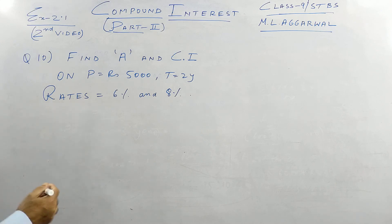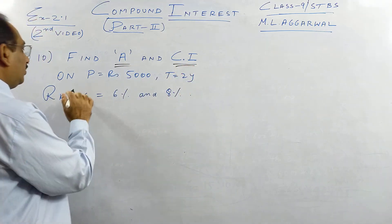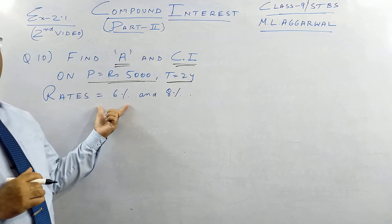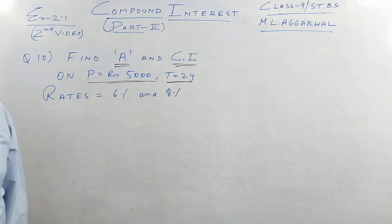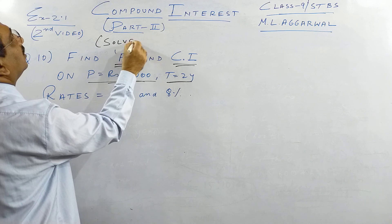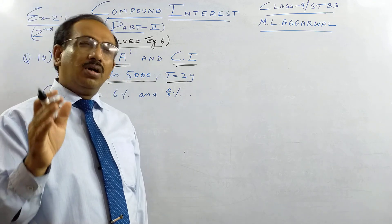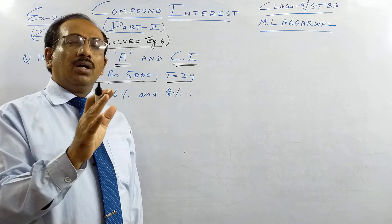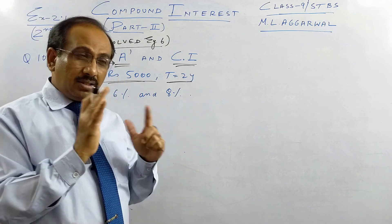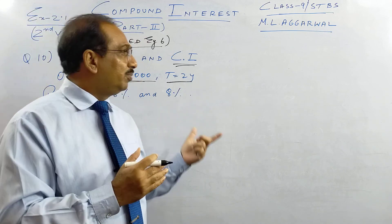Here we start the last question of this session: find the amount and compound interest. Principal is 5000, time is 2 years, but the difference here is two different rates of interest — 6% for the first year and 8% for the second year. A similar solved example 6 is in ML Agrawal's book. My advice: always study all solved examples before attempting unsolved questions — you learn the method, what to write, and how to solve.